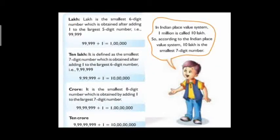Children, what is meant by Lakh? When will we get Lakh? After moving from the Ten Thousands place, we will get Lakh. The biggest five-digit number is 99,999. So if you add one to that number, you will get 1 Lakh. So 1 Lakh is the smallest six-digit number.